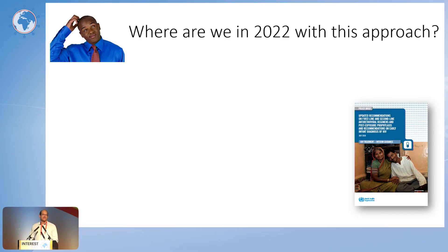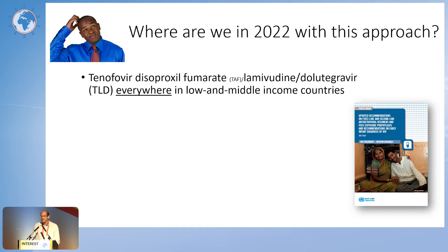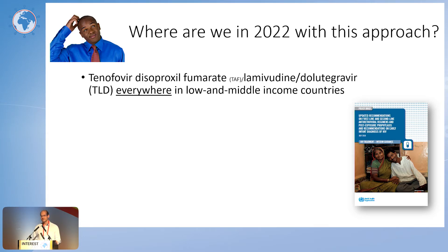So where are we in 2022? We've got TLD — tenofovir, lamivudine, dolutegravir — and in rich countries its alternate, TAF/bictegravir. It's replaced the efavirenz-based and NNRTI-based regimens pretty much across the globe. We are dependent on second-generation integrase inhibitors across first-line, second-line, and third-line. Efavirenz is rapidly becoming extinct, all the NNRTIs are becoming extinct, and protease inhibitors are used in vanishingly small numbers of people.